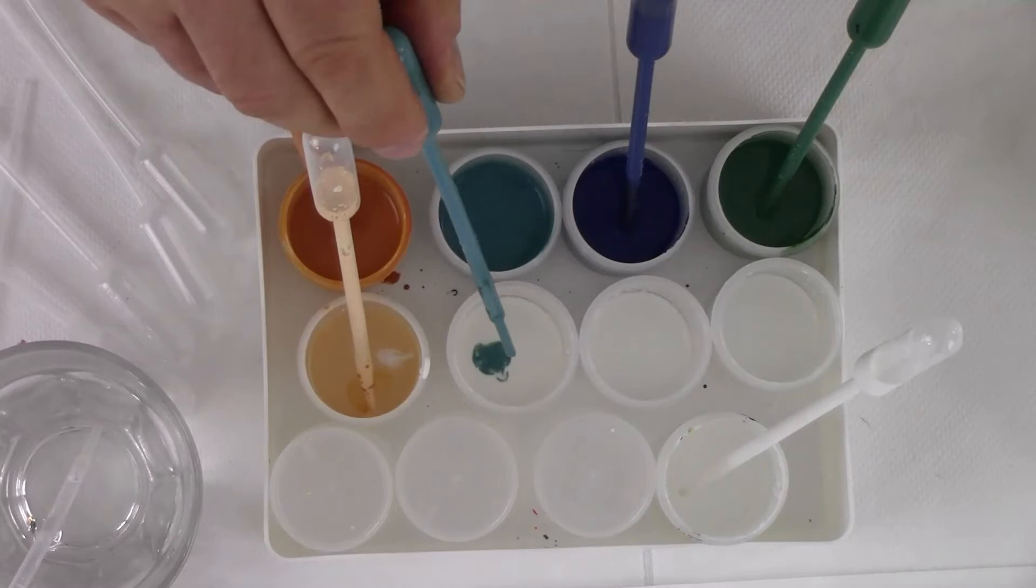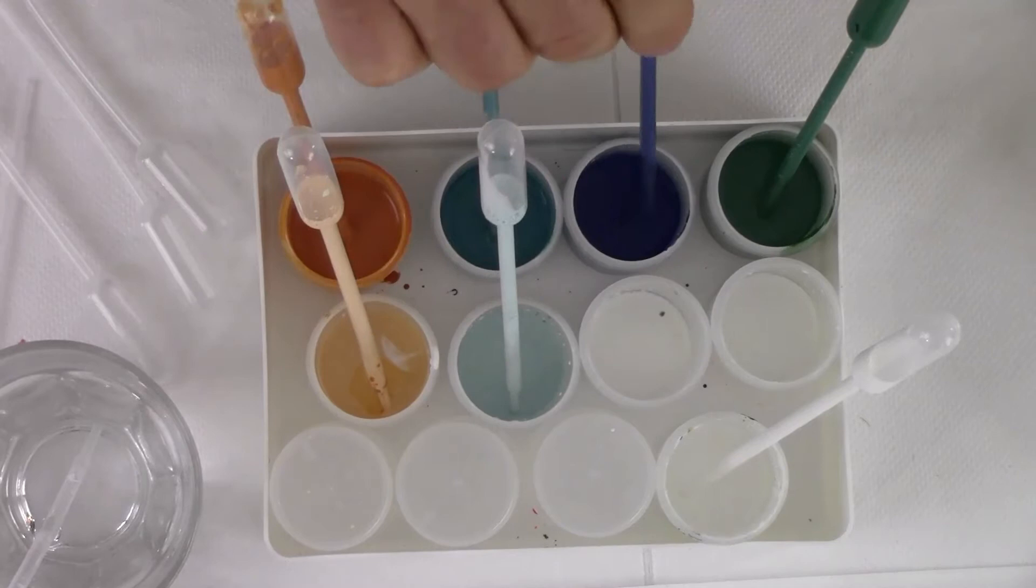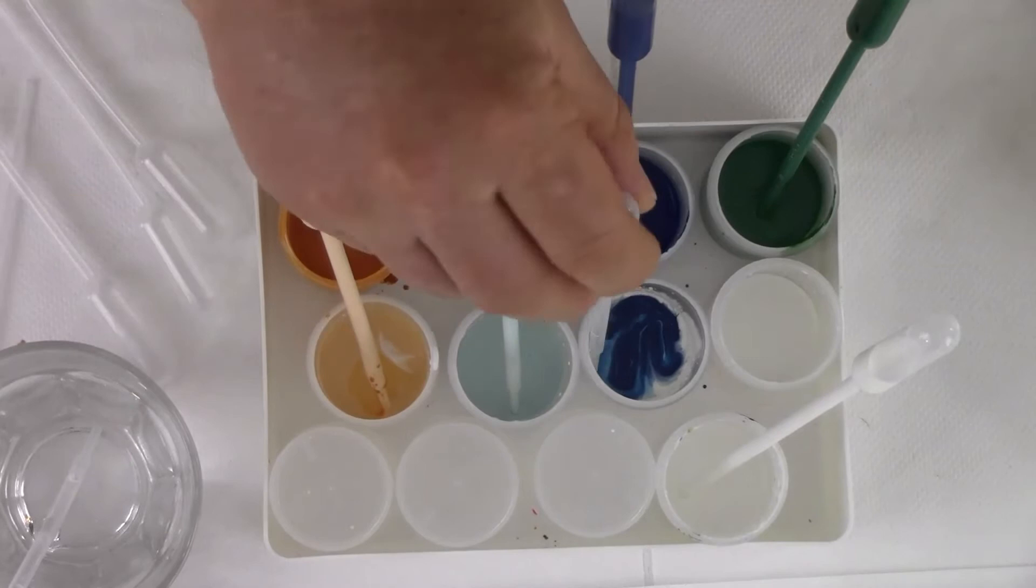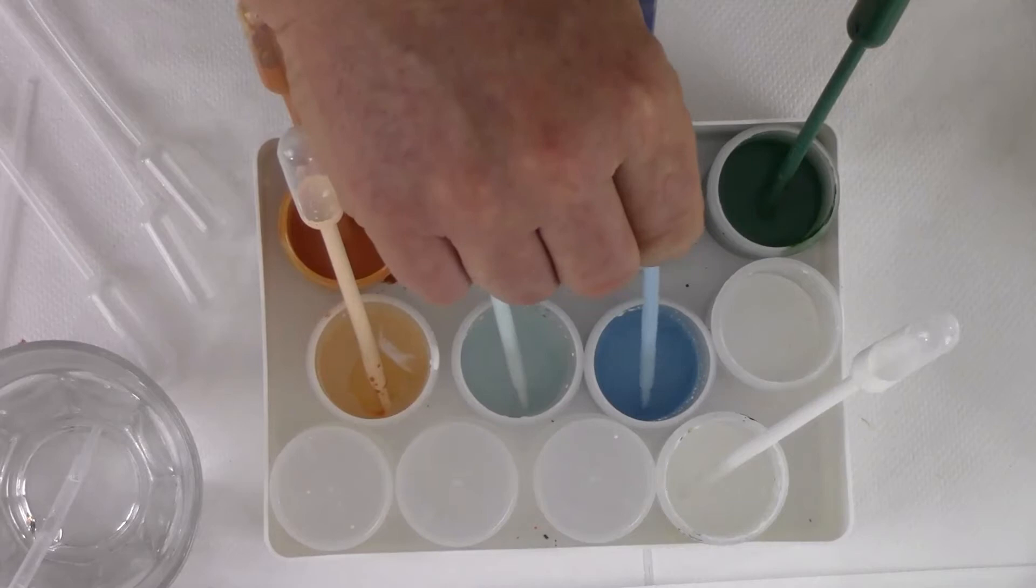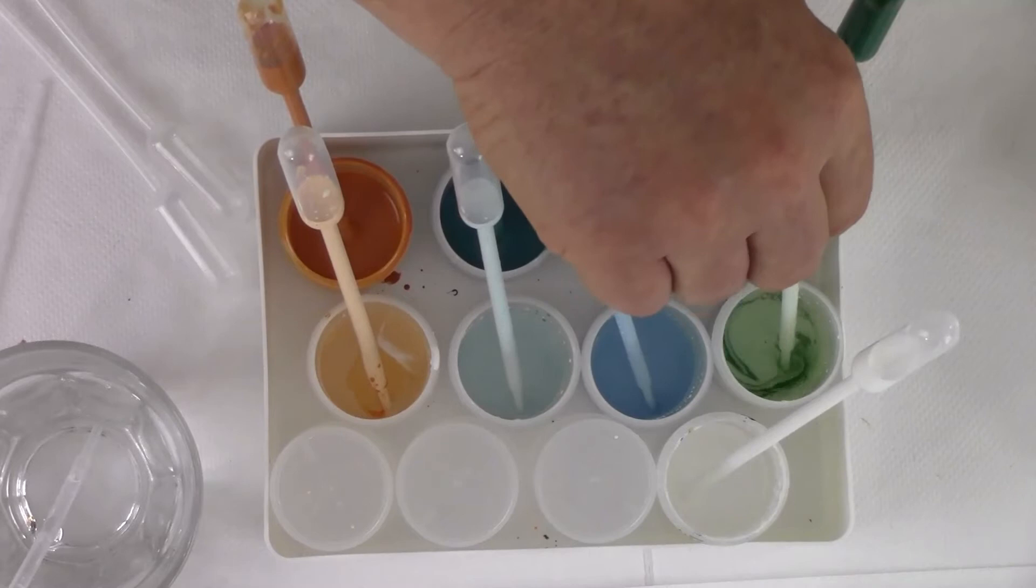Now we're gonna do the same with the teal and put a new pipette in. Now we have a tint of teal which is stunning and the same with the denim blue. So this is how simple this is. That's a beautiful color. Absolutely stunning and of course the country green and we have a beautiful tint of the country green. Fantastic.